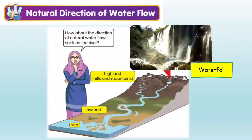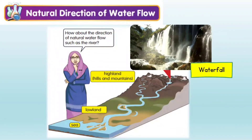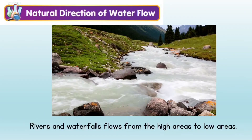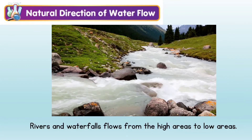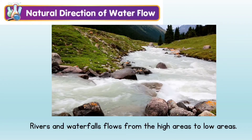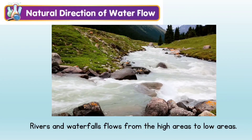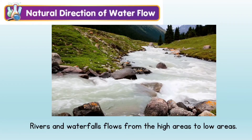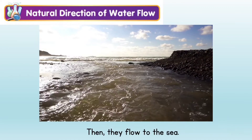How about the direction of natural water flow such as the river? The water from the high land — from the hills and the mountains — flows to the low land. Rivers and waterfalls flow from high areas to low areas, and then they flow to the sea.